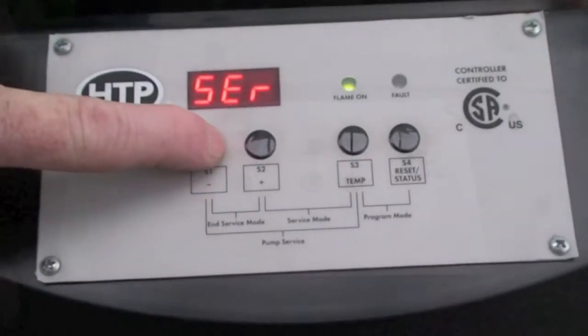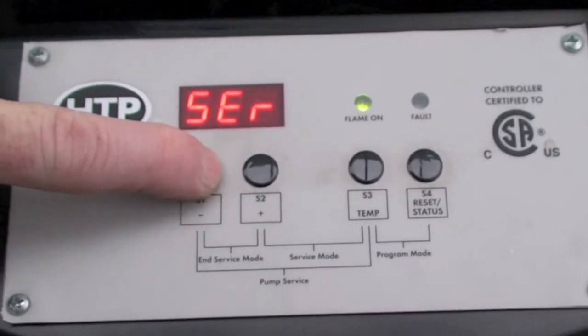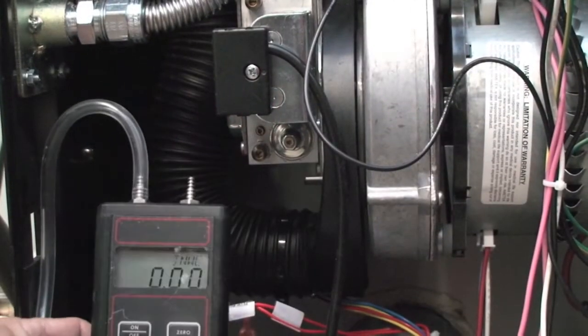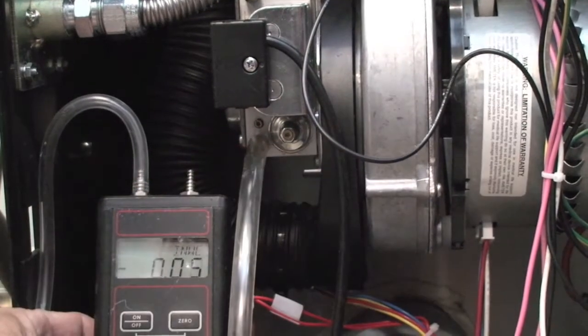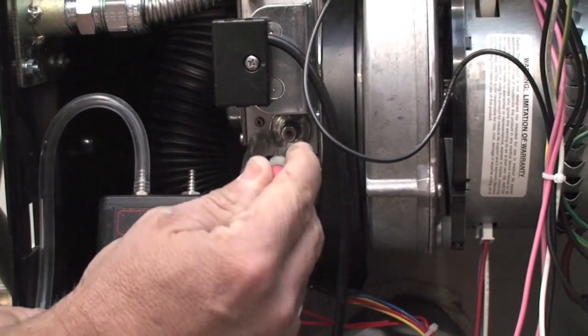If low fire combustion varies drastically from high fire, a small manifold pressure adjustment will be needed. Manifold pressure should be set to negative .01 on a manometer or a slight dip in CO2 from high fire to low fire. Manifold pressure adjustment should be performed only if high and low fire vary drastically.